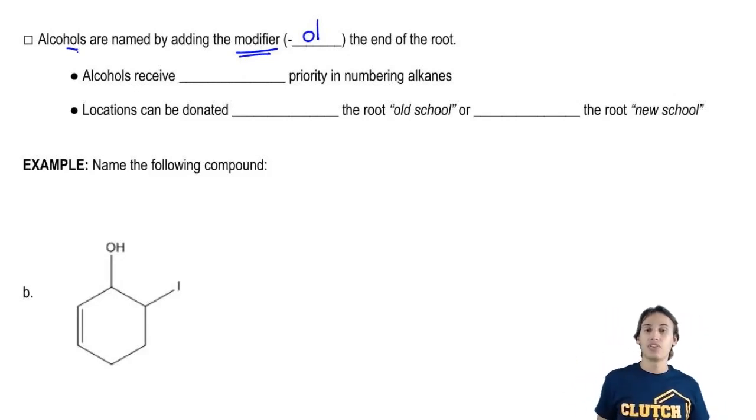It turns out that a lot of the same rules are going to apply for the alcohol as the double bond. For example, alcohols are actually going to receive highest priority in numbering alkanes.